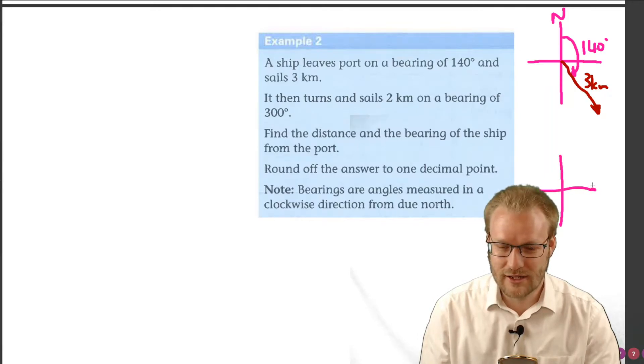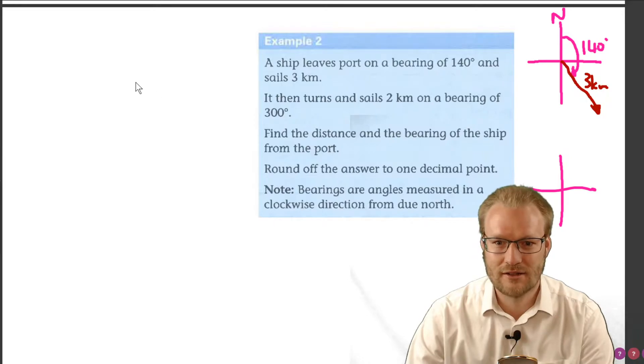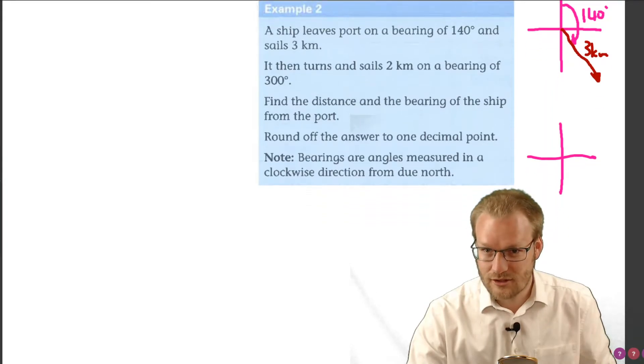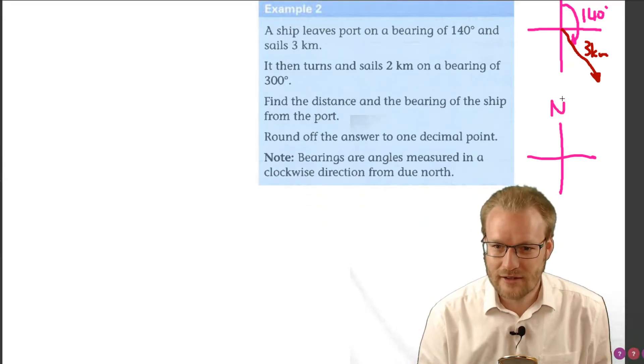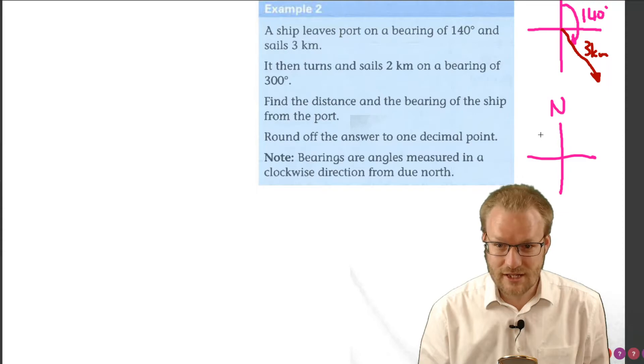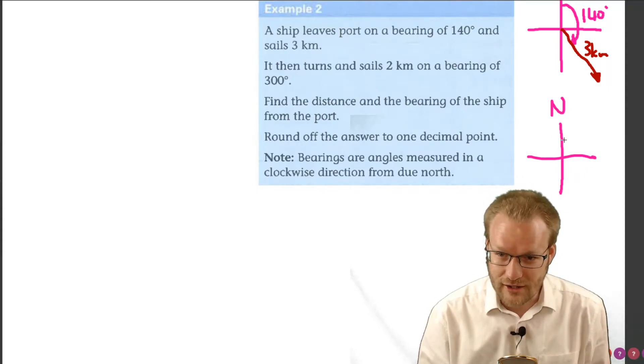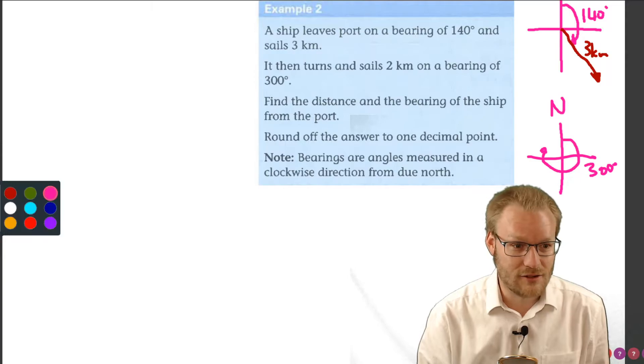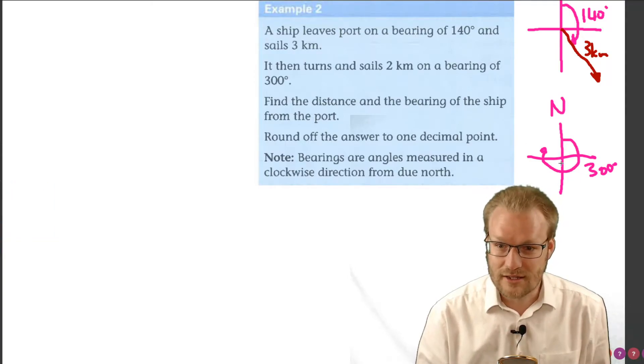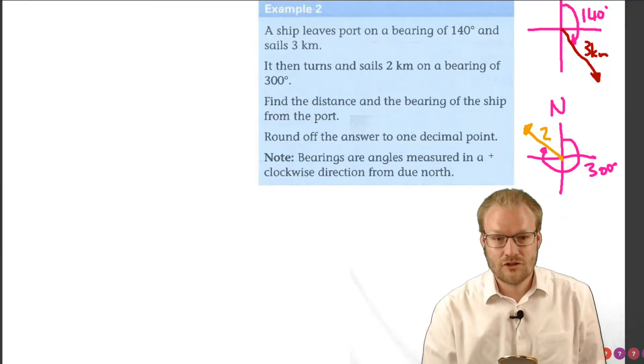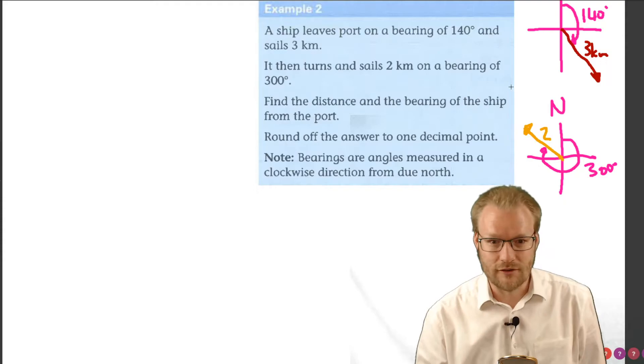Let's see what happens with the next part. I'm going to draw another cartesian plane, but I'm going to put another one in here, like a little compass. That's north. If it's gone 300 degrees, 90, 180, 270, it must be up here somewhere, so it's going around and just a little bit there. That's 300 degrees.